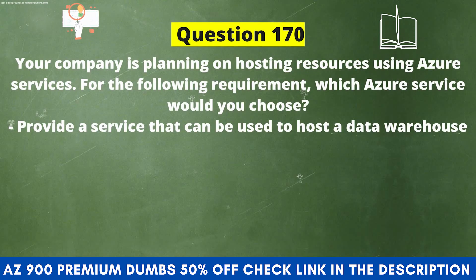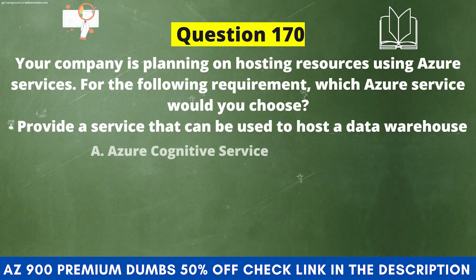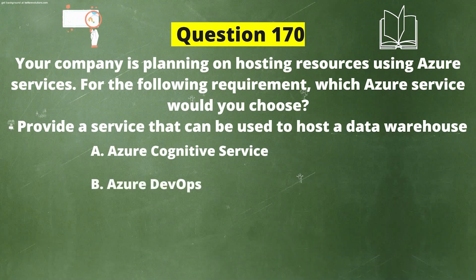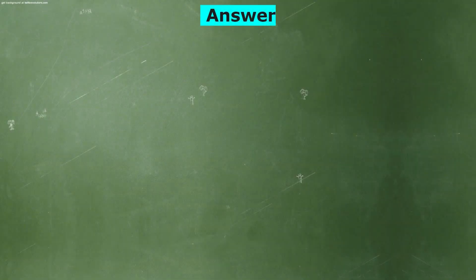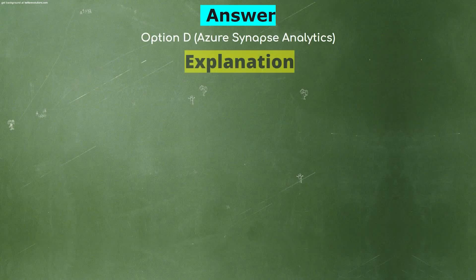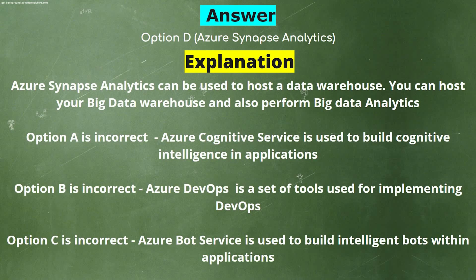Your company is planning on hosting resources using Azure services. Which Azure service would you choose to provide a service that can be used to host a data warehouse? Option A: Azure Cognitive Service. Option B: Azure DevOps. Option C: Azure Bot Service. Option D: Azure Synapse Analytics. The correct answer is Option D, Azure Synapse Analytics. You can host your big data warehouse and also perform big data analytics. Azure Cognitive Service is used to build cognitive intelligence in applications. Azure DevOps is a set of tools used for implementing DevOps. Azure Bot Service is used to build intelligent bots within applications.